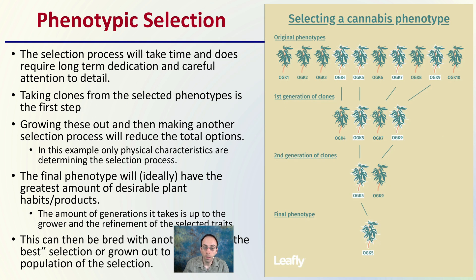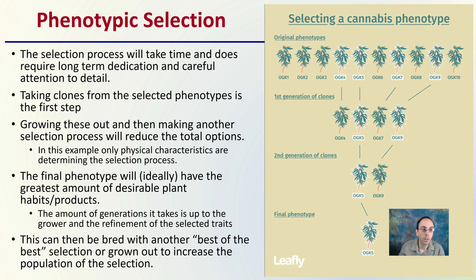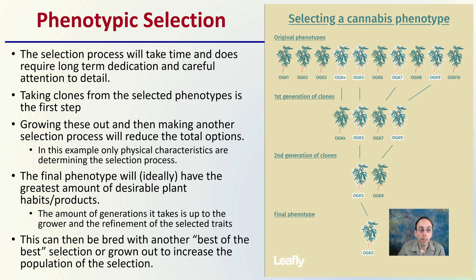The phenotype selection process will take time and requires long-term dedication and careful attention to detail. Taking clones from the selected phenotype is the first step. Growing these out and then making another selection will reduce the total number of options. In this example, only physical characteristics are determined in the selection process.